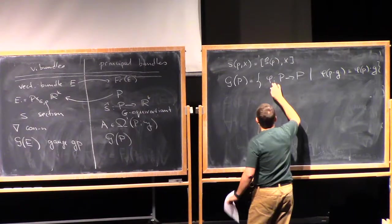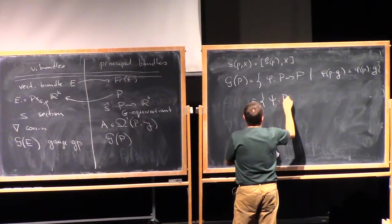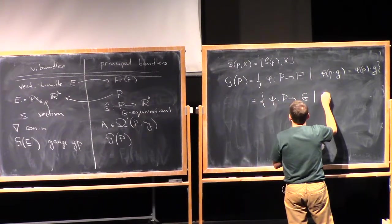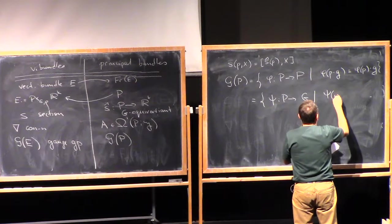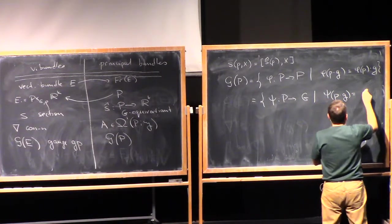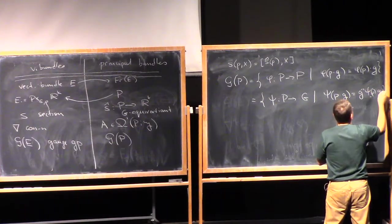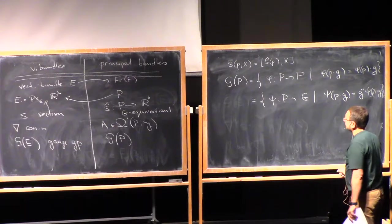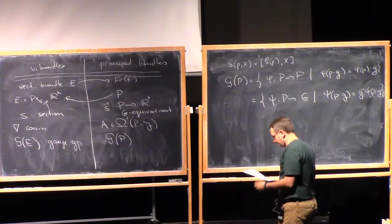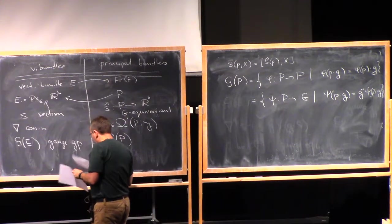In other words, what we see from here is that the value of phi at the point p must be in the same orbit of the Lie group action. That is, I can represent any map phi as a map psi from P to G, and the condition is that psi of p times g is psi of p g g inverse.